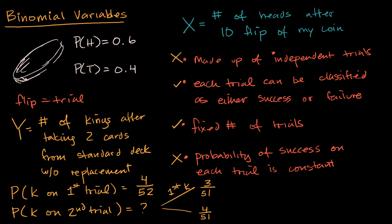If instead of without replacement we said with replacement — replacing every card after picking it — then things would be different. We'd actually be looking at a binomial variable: your probability of a king on each trial stays constant at 4 out of 52, you have a finite number of trials, the probability of success is constant, the trials are independent, and each trial can easily be classified as either a success or failure.